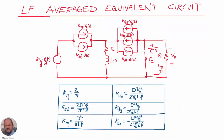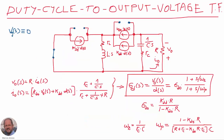By evaluating these partial derivatives at the DC operating point of the converter, this is our resulting circuit in the Laplace domain with all the elements. Here we also have the values for all the different coefficients in our equivalent circuit. From this equivalent circuit we can obtain the different transfer functions of interest. For example, for the duty-cycle-to-output-voltage transfer function, we make zero the perturbations coming from the peak line voltage, giving a short circuit at the input voltage source and open circuits for the other current sources.